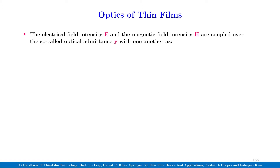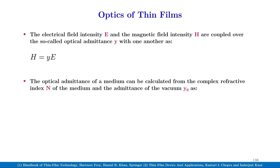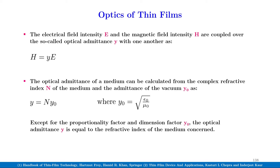The electrical field intensity e and magnetic field intensity h are coupled over the so-called optical admittance y with one another as h equal to y times e. The optical admittance of a medium can be calculated from the complex refractive index N of the medium and the admittance of the vacuum y0 as y equal to N times y0, where y0 equals the square root of epsilon0 divided by mu0. Except for the proportionality and dimension factor y0, the optical admittance y is equal to the refractive index of the medium concerned.